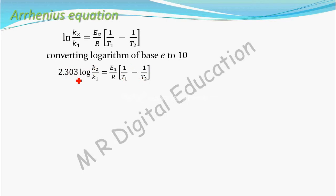Take this 2.303 to this side. So, it will become log of k2 by k1 equal to Ea by 2.303 into R into 1 by T1 minus 1 by T2. Take LCM of 1 by T1 minus 1 by T2.